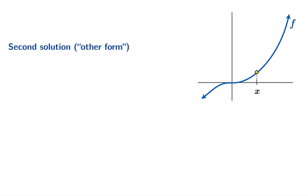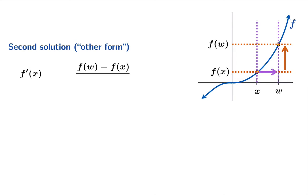Now let's revisit the solution using the other form so in this case we're identifying a nearby argument w we're going to take the change in function value which of course is just f of w minus f of x and the change in argument in this case is just w minus x.